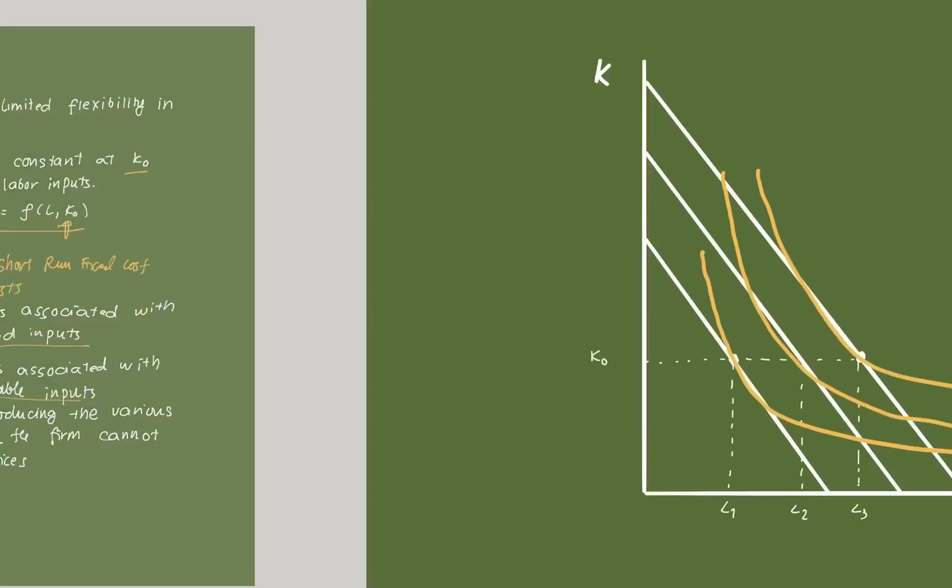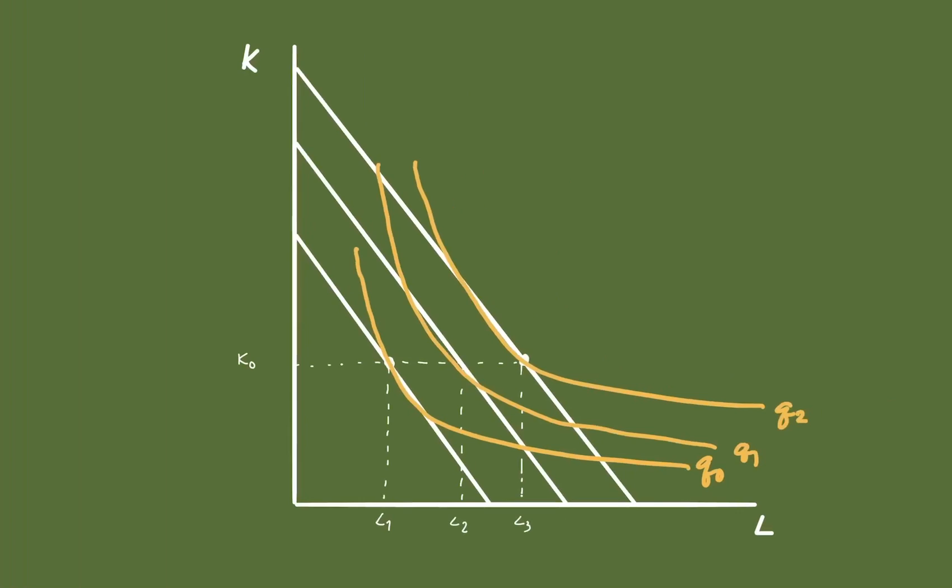Visualize here—we have three iso-cost lines: C1, C2, and C3, and three isoquants. At the first isoquant, we should be producing at a point where the MRTSLK or the negative of the slope of the isoquant should be equal to the input ratio. But in this case, look, we're employing K-naught because we have no control over that, and employing L1. But notice the slope of the isoquant is here and the slope of the iso-cost is here. They're not in an optimal state.